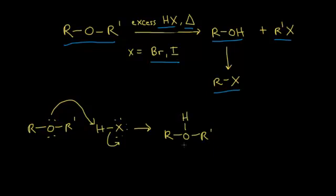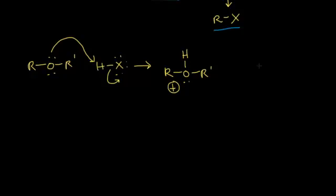So we have a hydrogen there, a lone pair of electrons on this oxygen, which gives this oxygen a plus one formal charge. Our halogen used to have three lone pairs of electrons, and it just picked up one more lone pair of electrons to form a halide anion, which is going to function as our nucleophile. Our nucleophile is going to attack the carbon bonded to the oxygen, and then the electrons between the carbon and the oxygen are going to kick off onto the oxygen. This is an SN2 type mechanism.